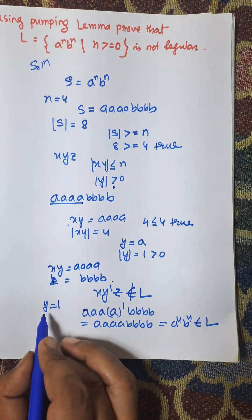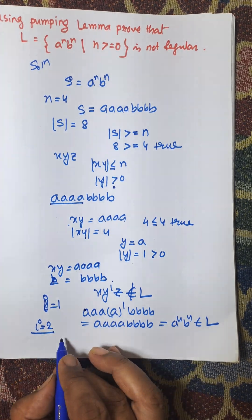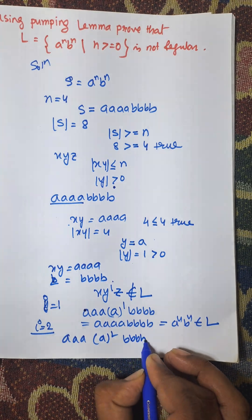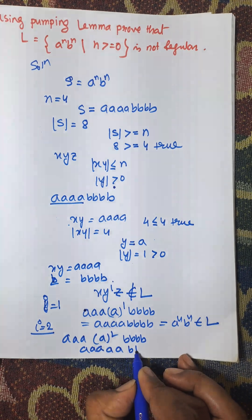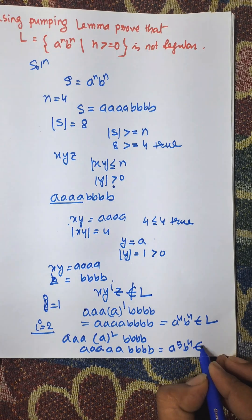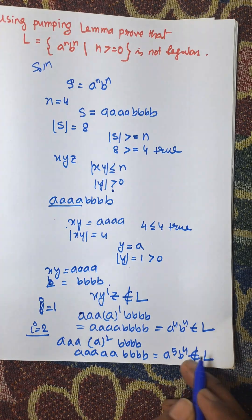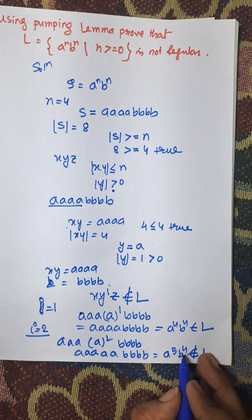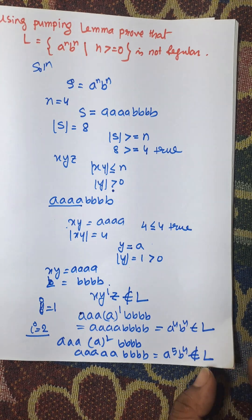Now consider i equal to 2. Then we will get A, A, A, A squared and the remaining B, B, B, B. Here we will get a to the power of 5, b to the power of 4, which does not belong to L. So for i equal to 2, this violates the concept of the language, so it is not a regular language. It must be a to the power 5, b to the power 5, but here a to the power 5 and b to the power 4 exist. So it is not a regular language.